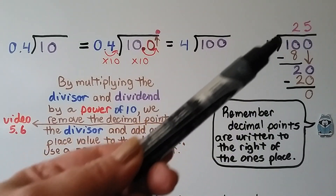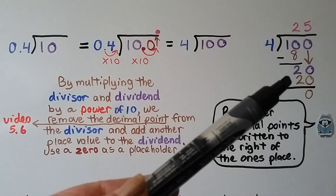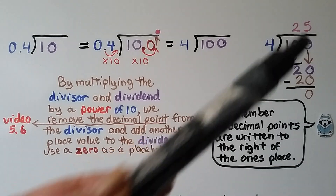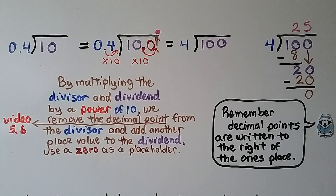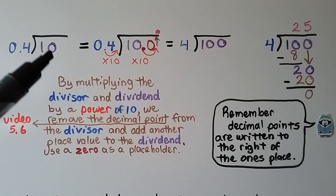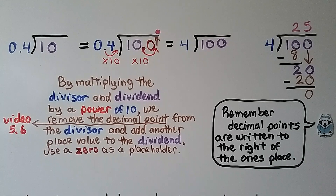Four fits into 10 two times because 4 times 2 is 8. We subtract 10 minus 8 and get a 2. It's this zero's turn to come down, and 4 fits into 20 five times. We subtract — 4 times 5 equals 20 — and get a zero. We have a zero remainder so we know we're finished. Decimal points are written to the right of the ones place, so the zero is in the ones place when we add a decimal point. We put it right here and we'll have to use a zero as a placeholder.